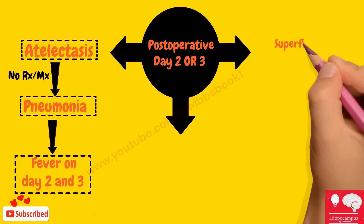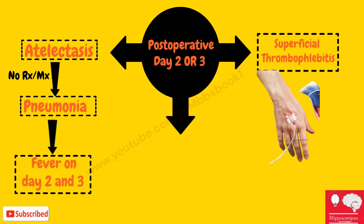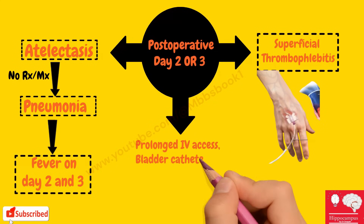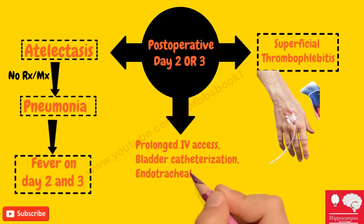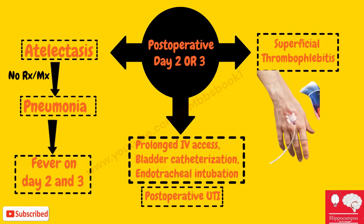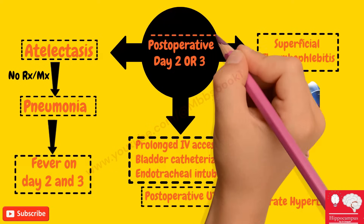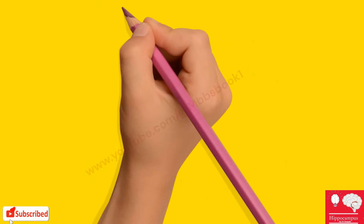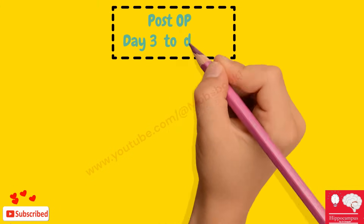Next, superficial thrombophlebitis — the cannula site of the patient may show swelling due to superficial thrombophlebitis. Prolonged IV access, bladder catheterization, or endotracheal intubation present ongoing risk of infection resulting from disruption of normal host defense mechanisms. Postoperative UTI is more common in patients with pre-existing prostatic hypertrophy. All these can manifest between day two and day three.